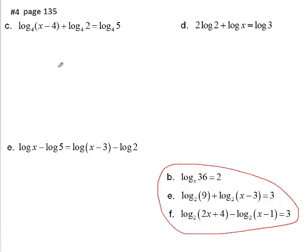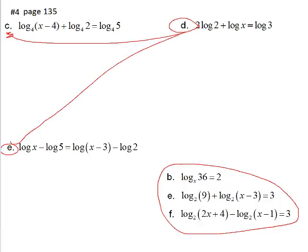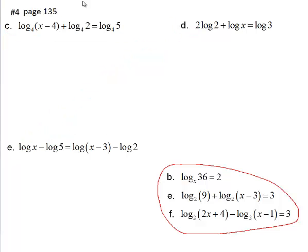In the first three from number 4, C and D and E, what you'll notice is that on both sides of the equal sign, they have logs. Look at C, there's logs on this side, and there's logs on this side. So both the left-hand and right-hand side of the equations have logs.